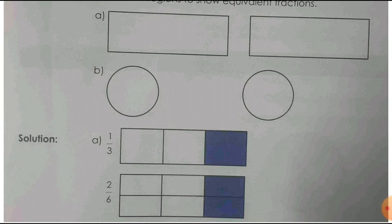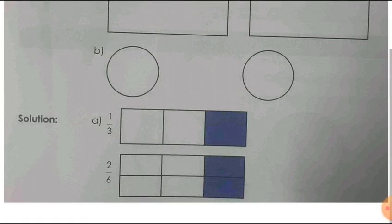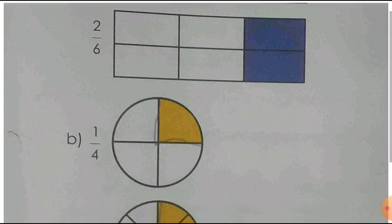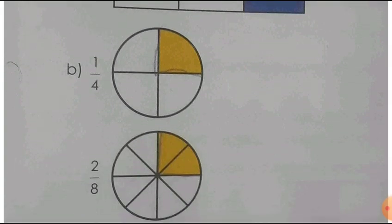If you are taking 1 by 2 and 2 by 4, that is also equivalent. You can cut the first rectangle into two equal parts, shade one portion; then in the second rectangle, divide it into four equal parts and shade two parts — that also shows the equivalence. For the circles: the first circle is divided into four equal parts and one is shaded; the second circle is divided into eight equal parts and two are shaded. Both shaded parts show the same portion of the whole, so these two are equivalent.